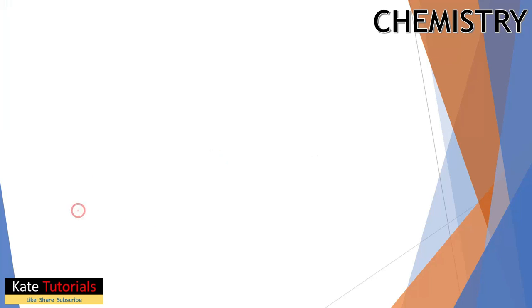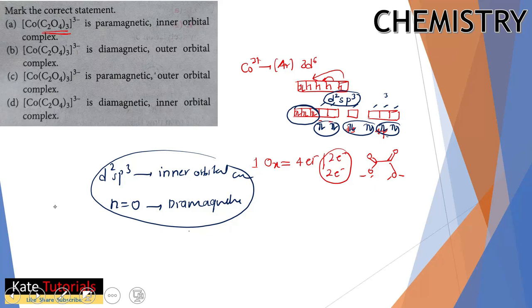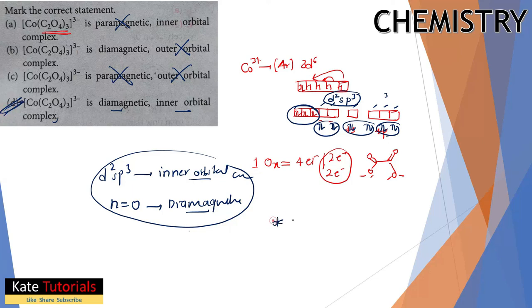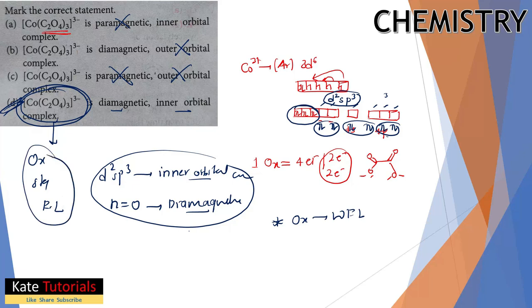The correct answer is option D: inner orbital complex and diamagnetic. Option A is wrong (paramagnetic), option B is wrong (outer orbital), and option C is wrong (both outer orbital and paramagnetic). The key thing to remember is that although oxalate is normally a weak field ligand, when combined with Co³⁺, it acts as a strong field ligand — this is the exception.